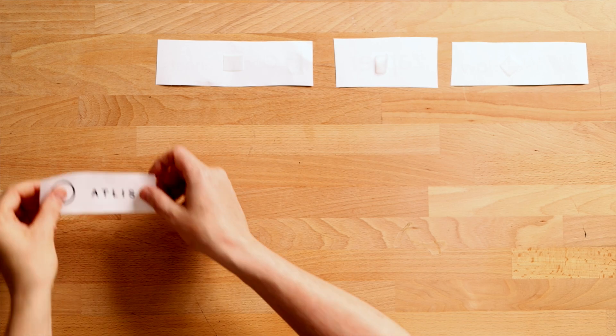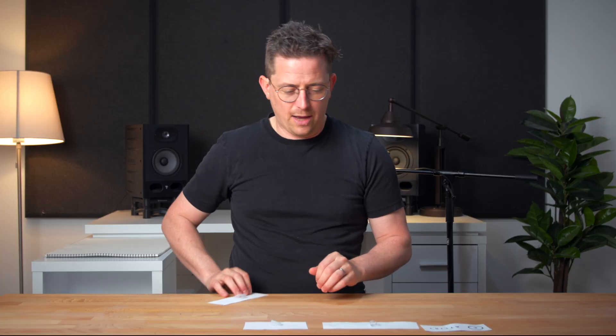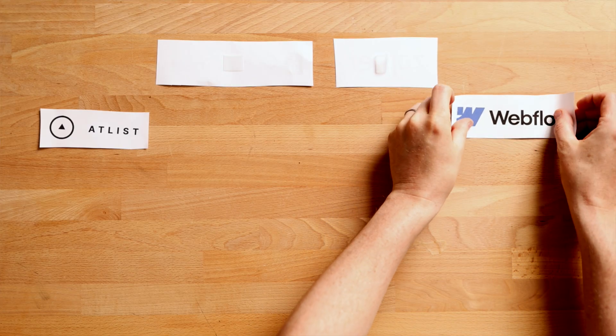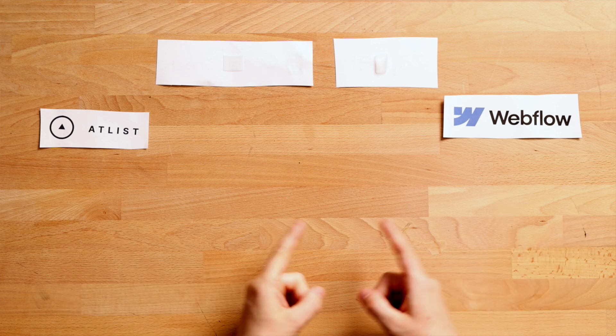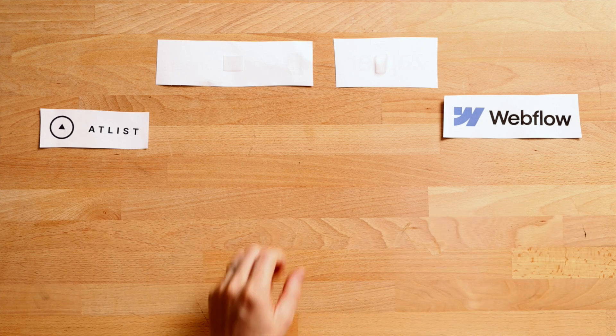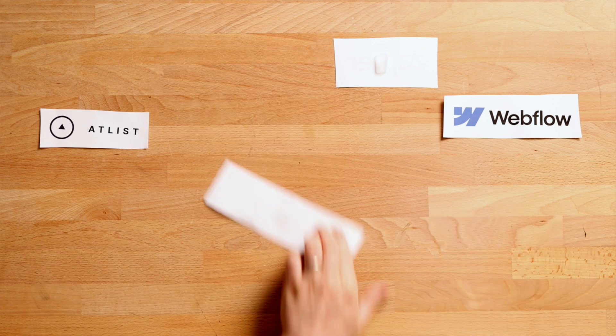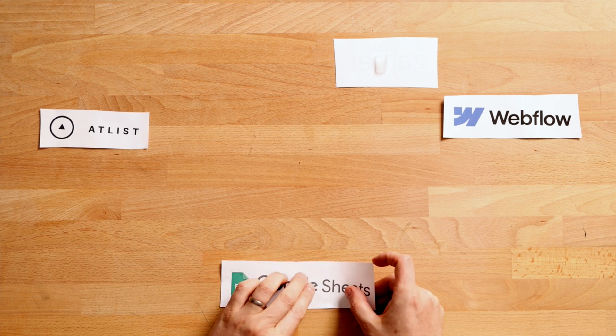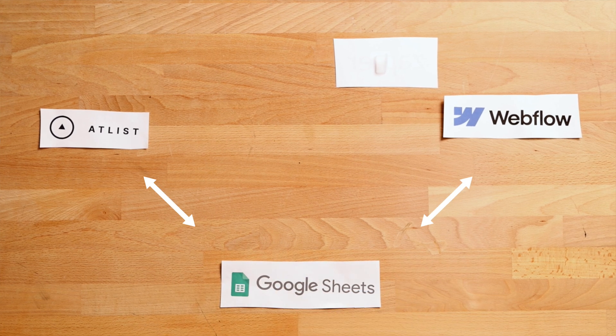So we have Atlas and we have Webflow, but we need a way to keep the data in sync between them. We're going to use Google Sheets as our source of truth. Both Atlas and Webflow will sync to Google Sheets, so if you make a change in Google Sheets, both Webflow and Atlas will automatically update.